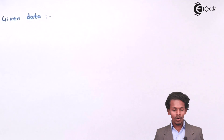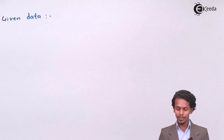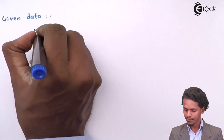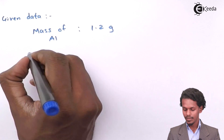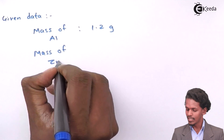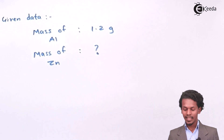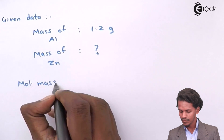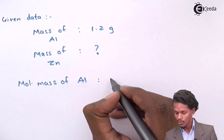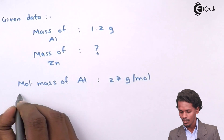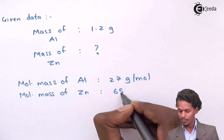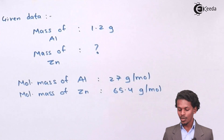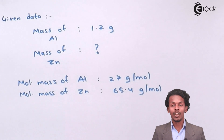The given data: the mass of aluminium is 1.2 gram. The mass of zinc is not provided — that is what we have to calculate. The molecular mass of aluminium is given as 27 gram per mole, while the molecular mass of zinc is given as 65.4 gram per mole.